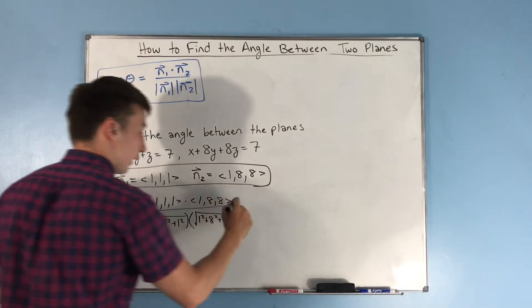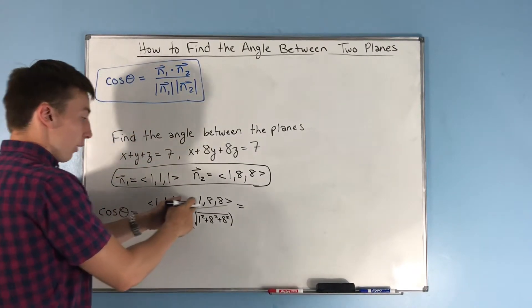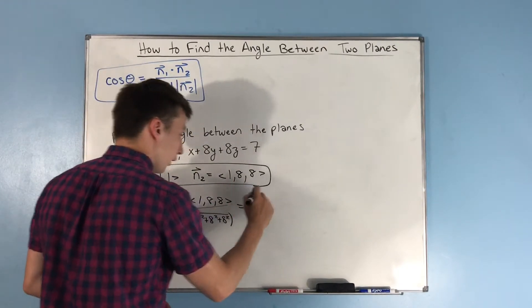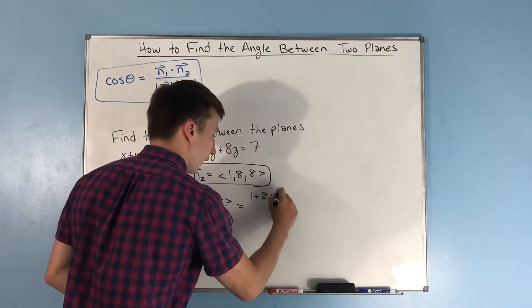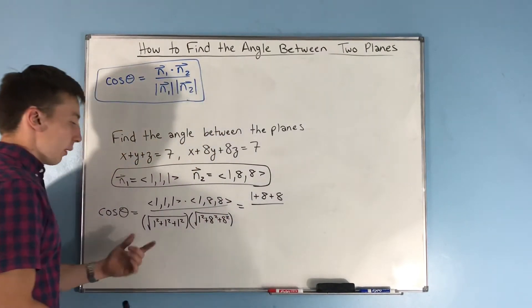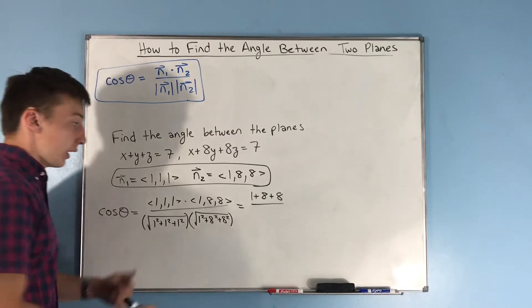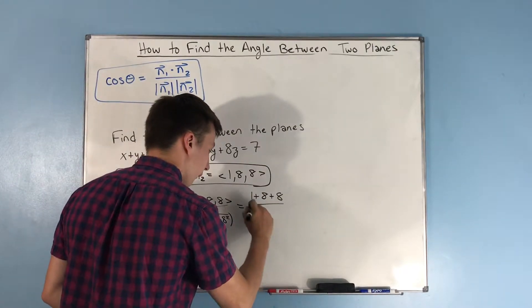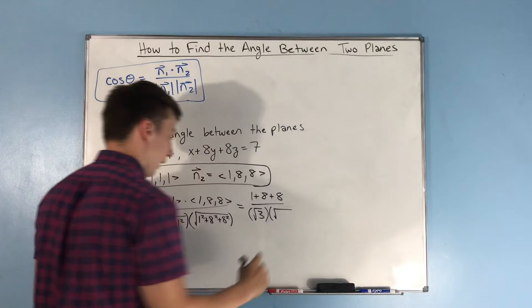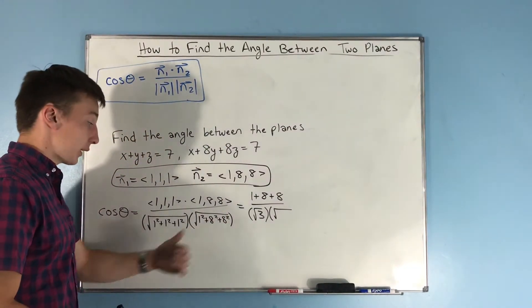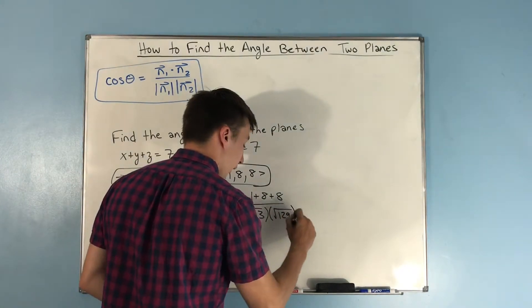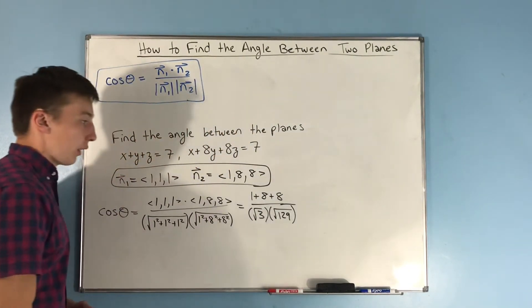That right there is equal to, if we do our dot product, we have 1 times 1 is 1, plus 1 times 8 is 8, plus another 8. So that's going to be over, we have rad 3 right here. That's going to be multiplied by 64 plus 64 is 128 plus 1 is 129. So we have rad 129 right here.